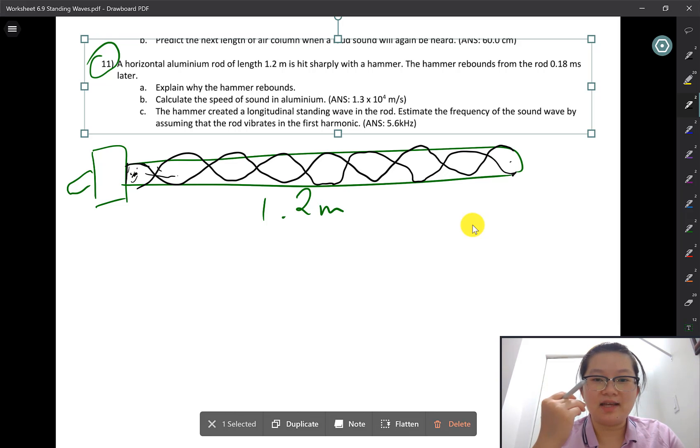As the rod resonates, it causes a shock. The hammer rebounds back because of that shock. This happens when the sound goes to the other end of the rod and comes back, interfering with the wave produced at the first point of contact. That interference causes a shock, causing the hammer to rebound.